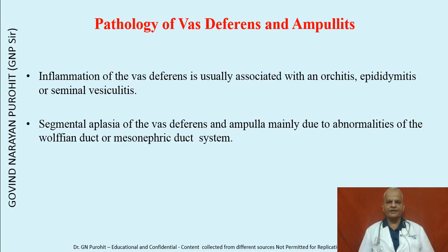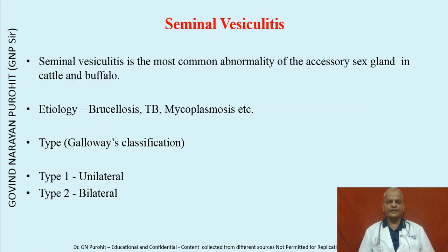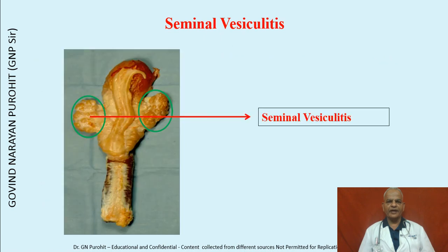Pathologies of the vas deferens and ampullae include inflammation usually associated with orchitis, epididymitis, or seminal vesiculitis. Segmental aplasia of the vas deferens and ampulla, mainly due to abnormalities of the Wolffian duct or mesonephric duct system, has been observed. Seminal vesiculitis is the most common abnormality of the accessory sex gland in cattle and buffalo. The etiology could be brucellosis, TB, mycoplasmosis, etc., and it may be unilateral or bilateral.